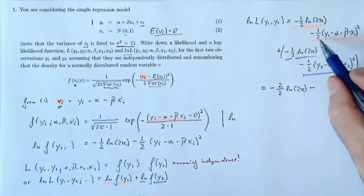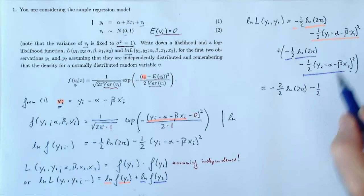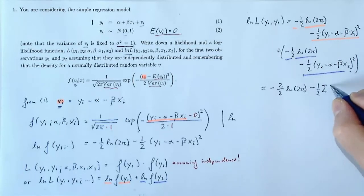And then the second part, we have that twice, so negative 1 half, but these are not identical. This is basically now the sum of yi minus alpha minus beta times xi squared, where i goes from 1 to 2 in this particular case.